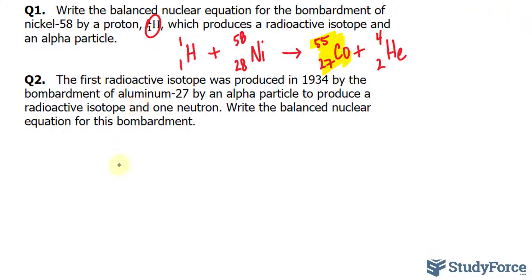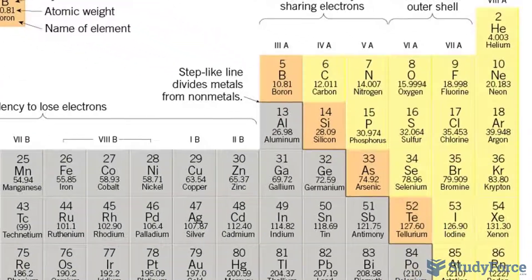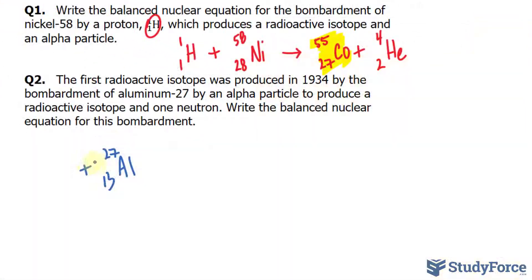So let's begin by writing out aluminum-27. And aluminum happens to be the 13th element on the periodic table. And it's being bombarded with an alpha particle. So we'll write down helium-4-2. And as mentioned, a neutron is released after these two particles interact. A neutron is represented as N-1-0 and it has zero protons, obviously.